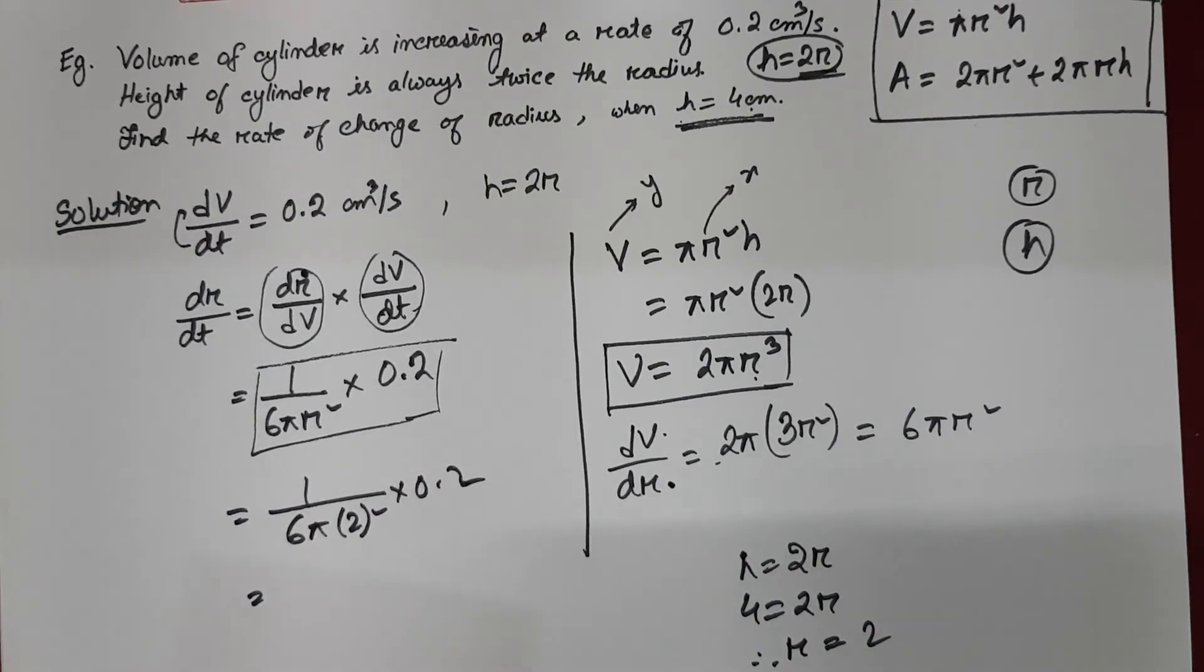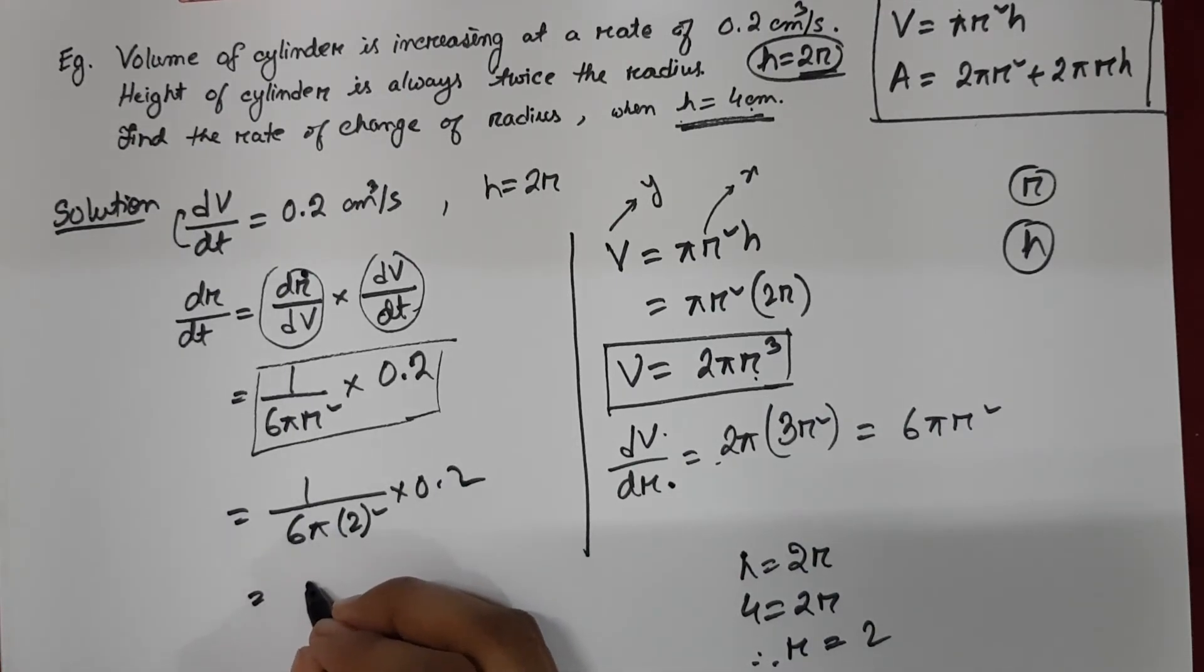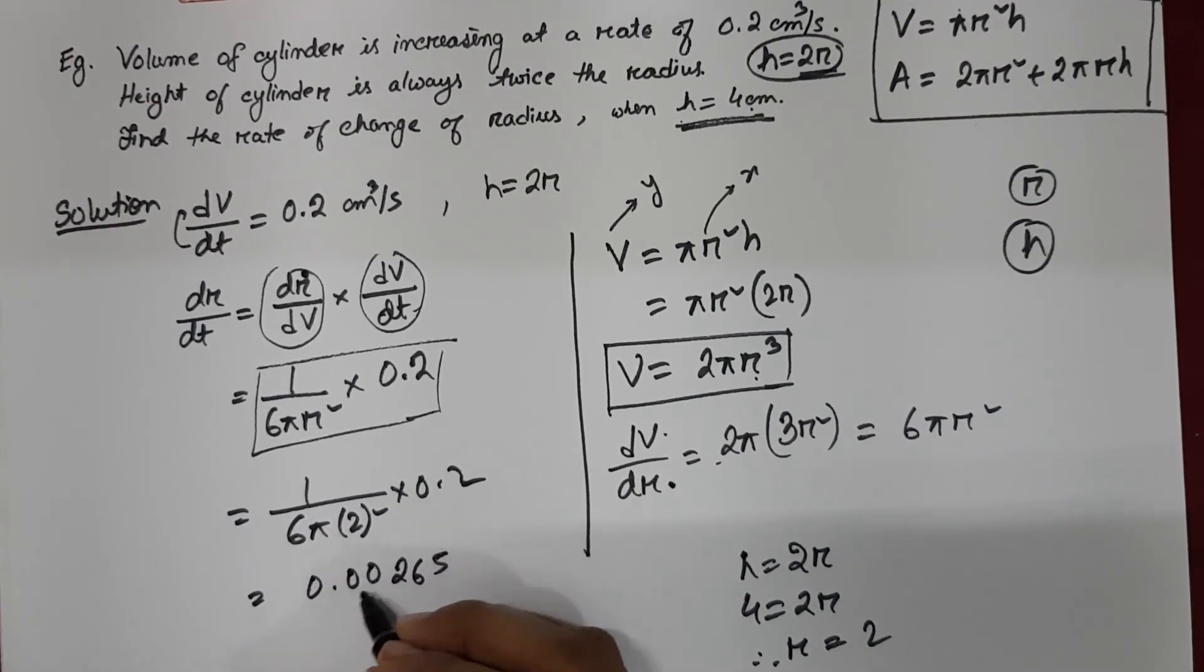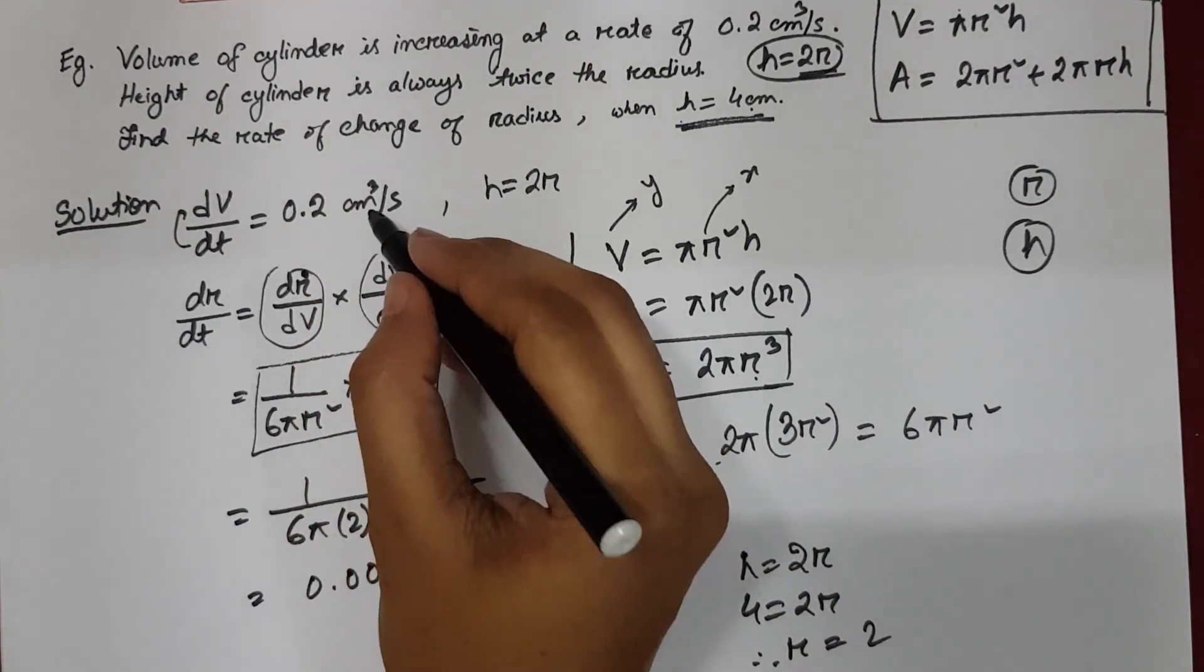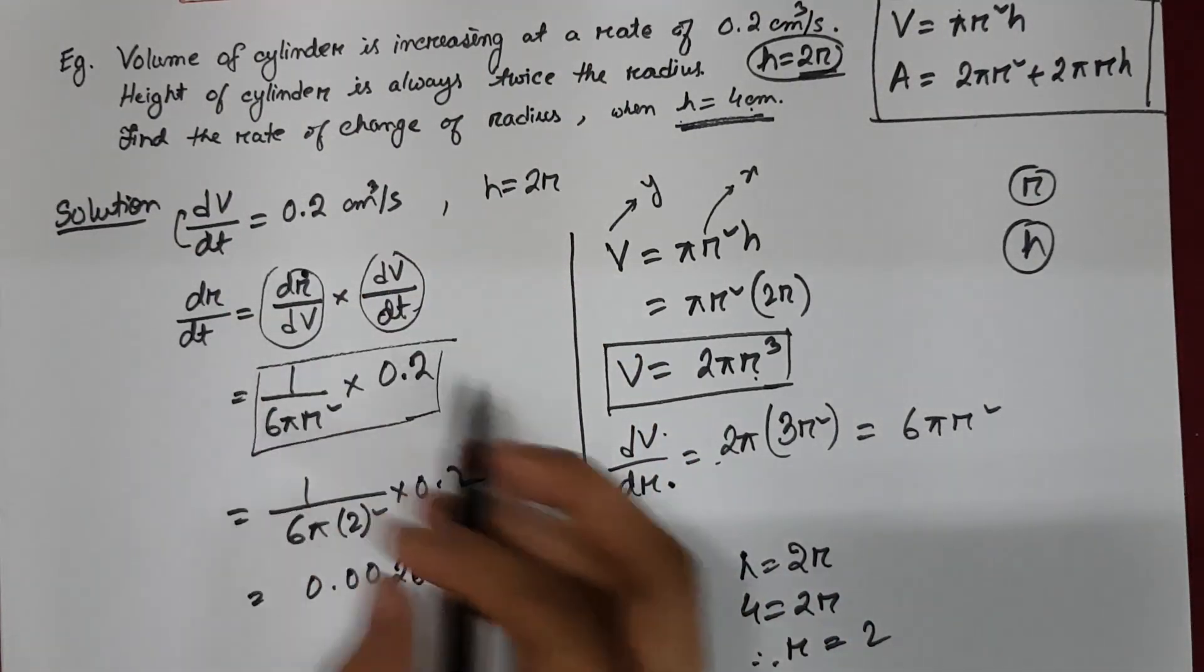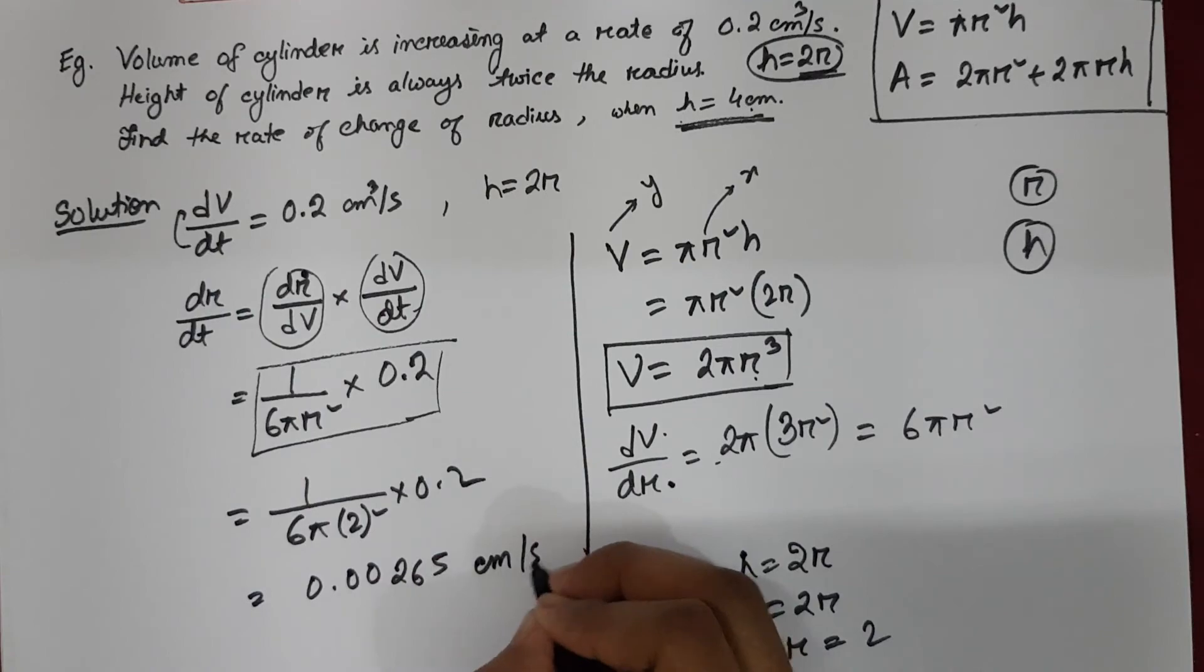So 0.2 divided by 6 pi into 4. So that's 0.00265123. Centimeter cube per second was for volume. And for radius, it will be centimeter per second.